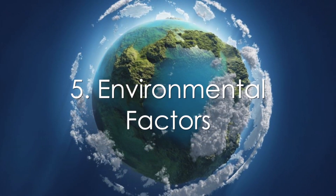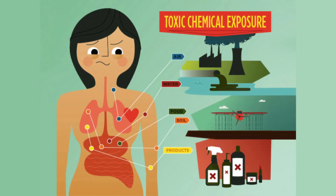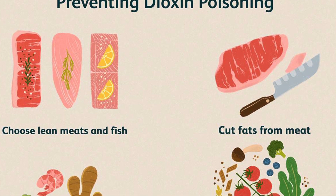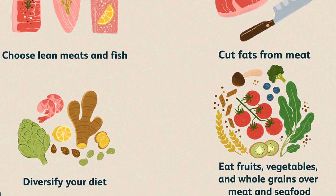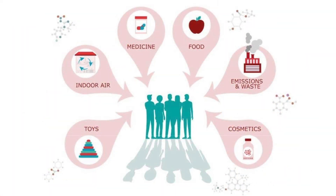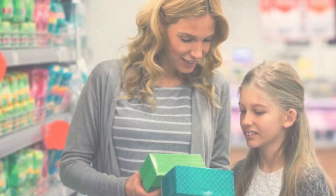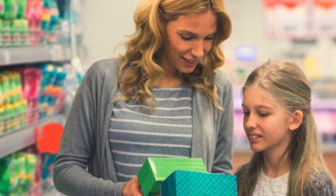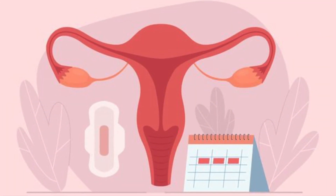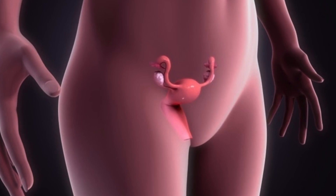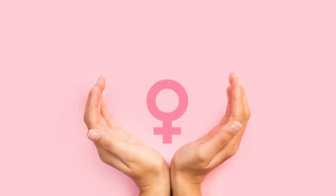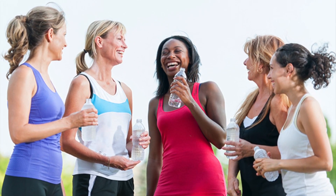Number five: environmental factors. Environmental factors such as exposure to chemicals and toxins may also contribute to the development of endometriosis. Certain chemicals such as dioxins have been linked to an increased risk of endometriosis. However, more research is needed to determine the specific environmental factors that may contribute to endometriosis. Other factors may play a role as well, such as the age you first start having periods — people who begin menstruating before age 11 may be at higher risk — the length of your menstrual cycle and duration of flow, and defects in your uterus or fallopian tubes. Understanding the causes of endometriosis is important for developing effective treatments and improving the quality of life for women with this condition.